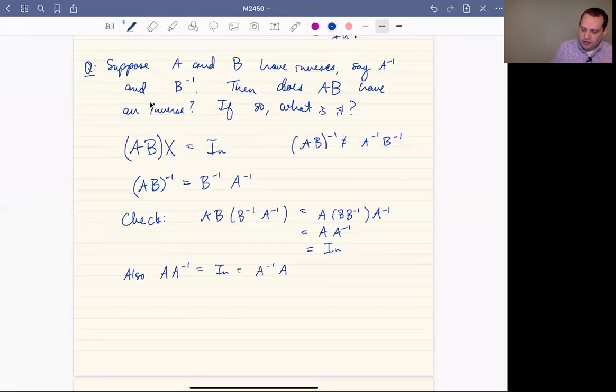The reason why I bring that up is that we can also check that B inverse times A inverse times AB will be the identity. So if I were to take this matrix AB and multiply by its inverse on the right or the left, I'm going to end up with the identity.